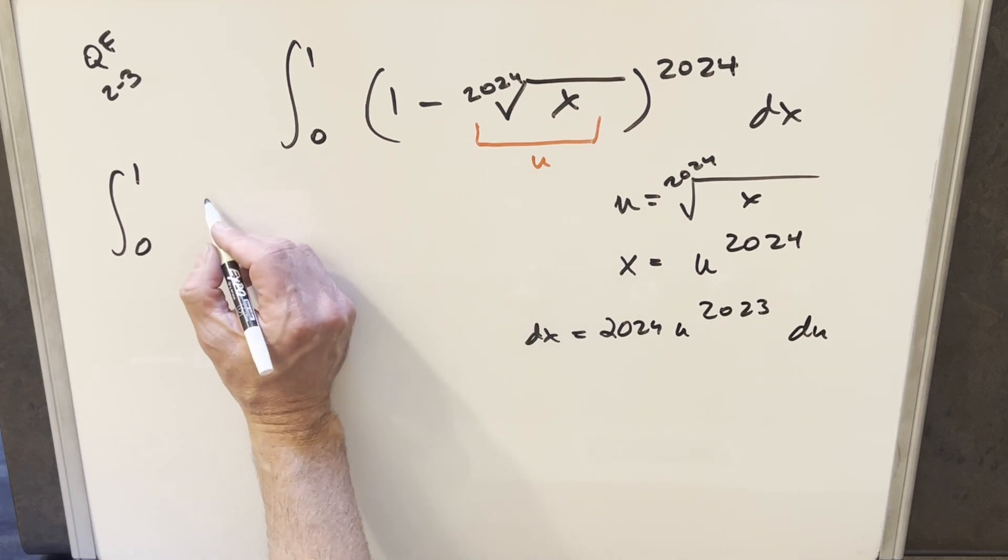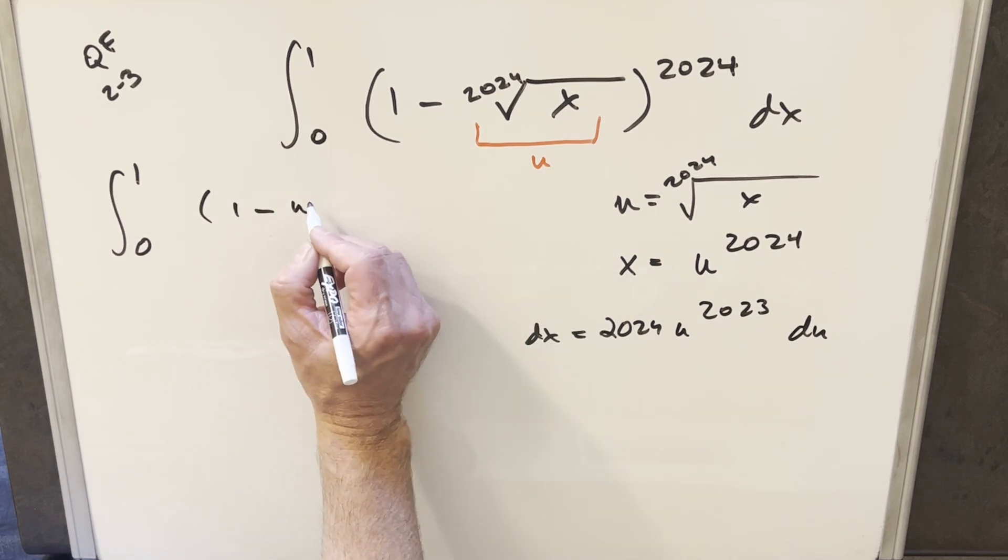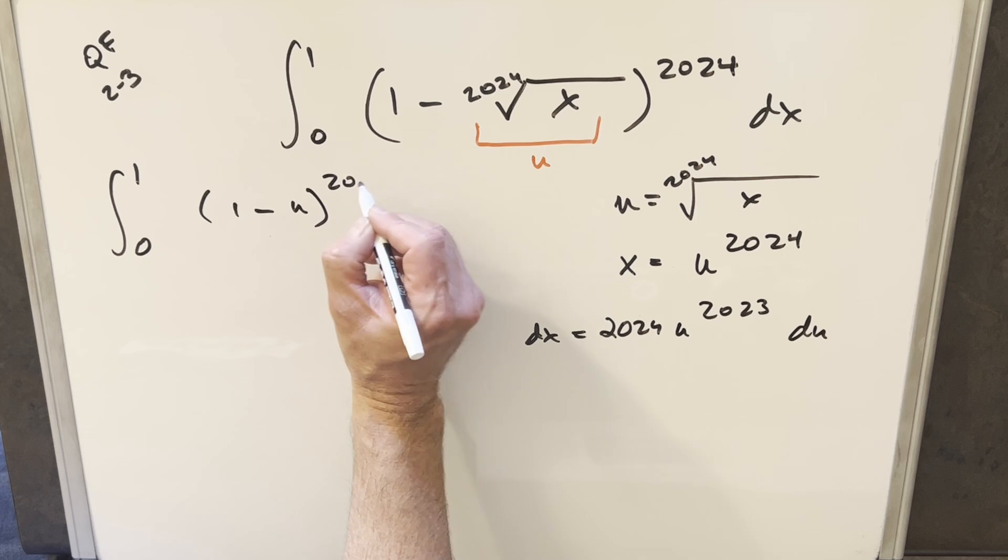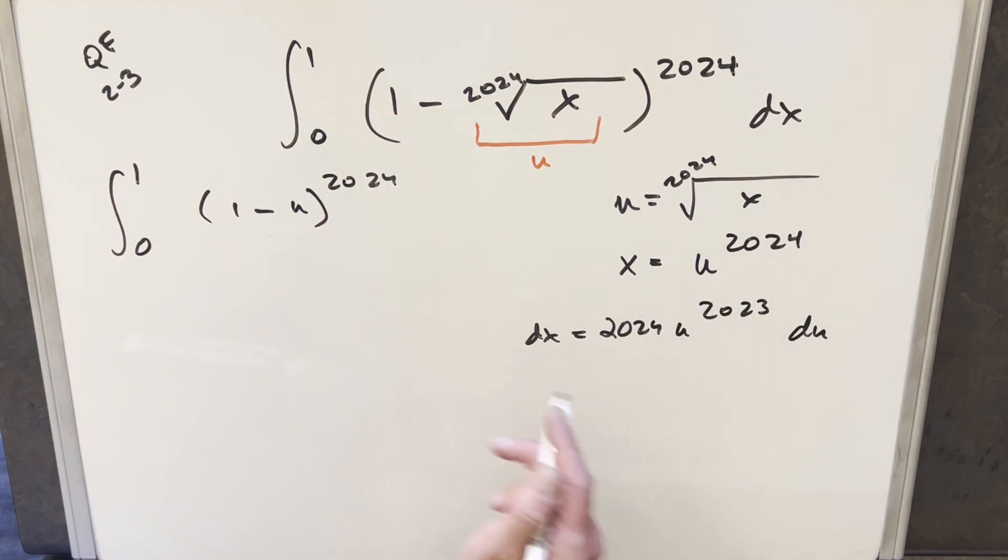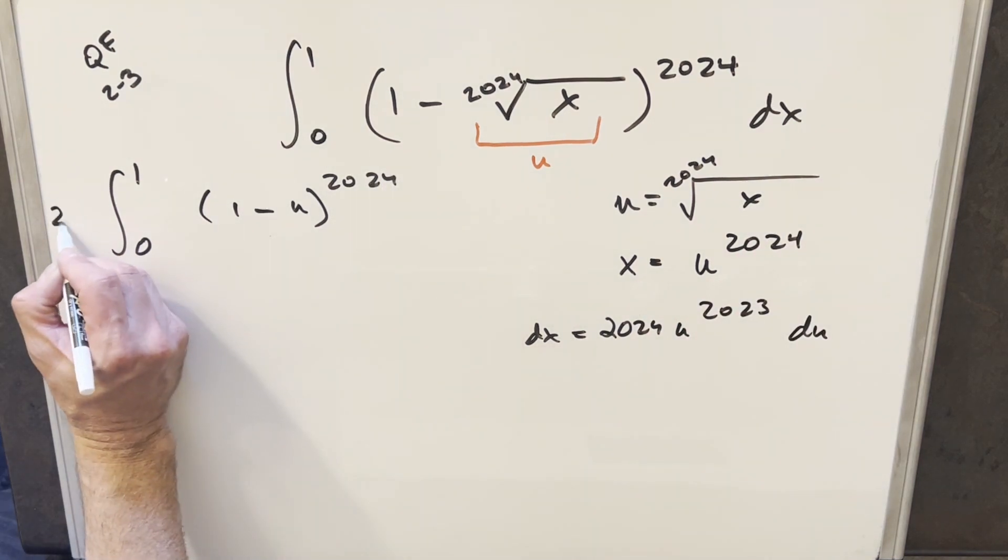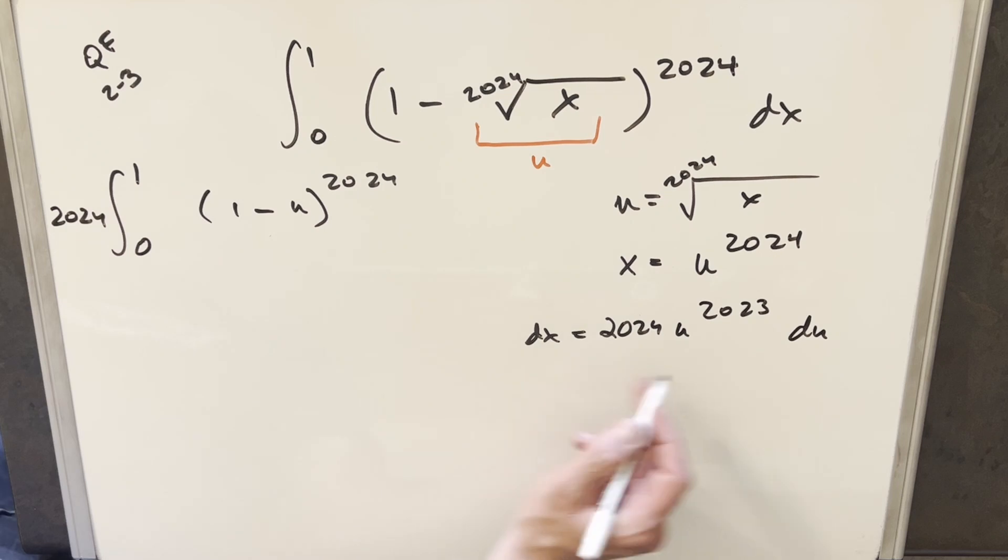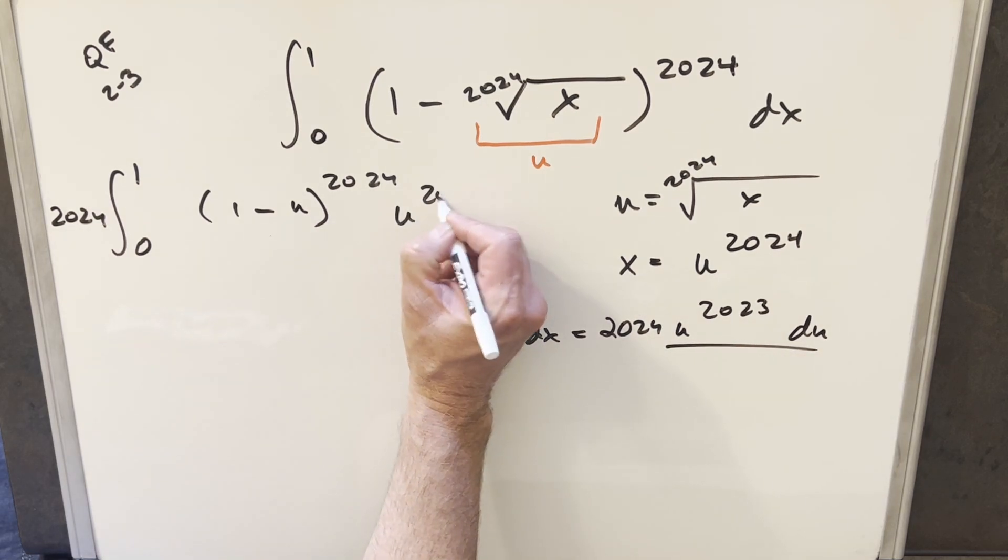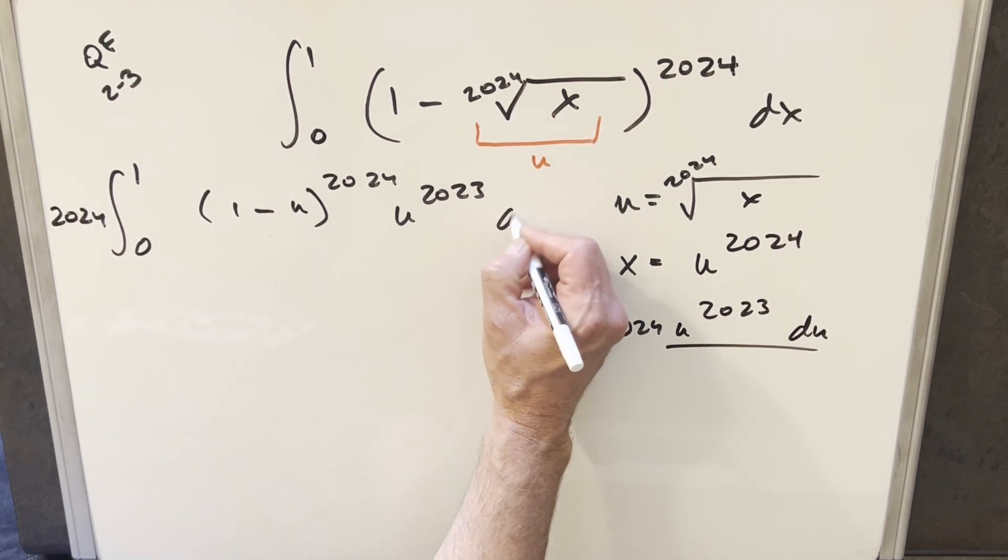Then here, this is going to transform into 1 minus u, and the power doesn't change. It's going to be 2024. And then for dx, we have this, but for the 2024, I'll bring that all the way out front here. And so we're just going to have this part. This is going to become u to the 2023 du.